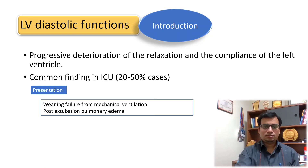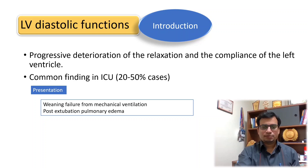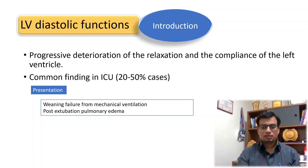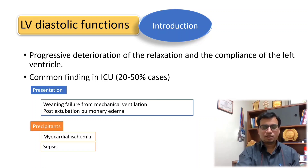It is increasingly recognized as a common cause of weaning failure and prolonged weaning, and also the reason for post-extubation pulmonary edema. The most common causes of LV diastolic dysfunction are acute myocardial ischemia and sepsis.